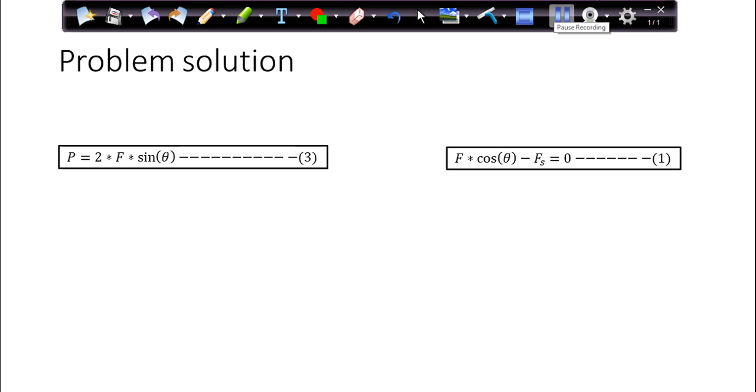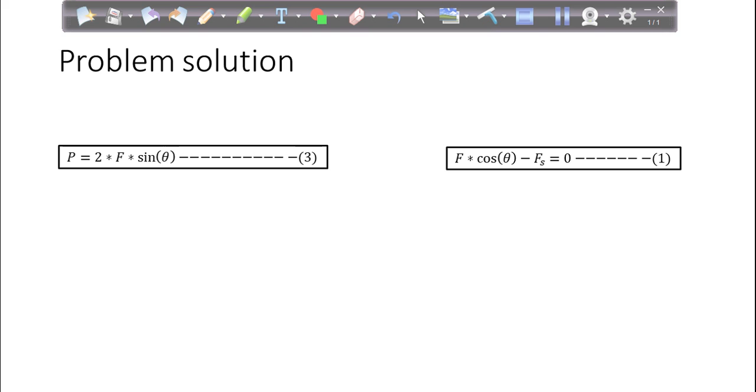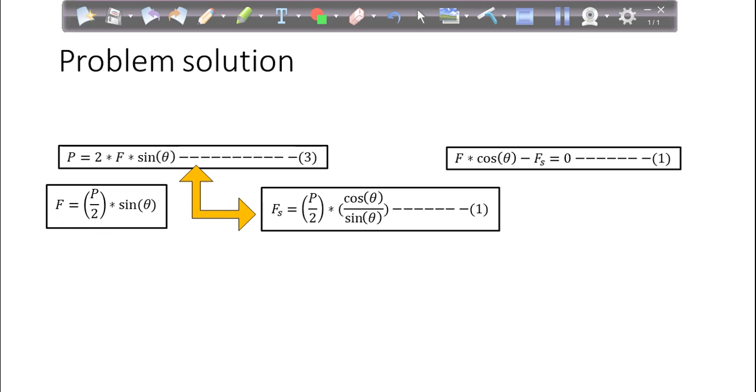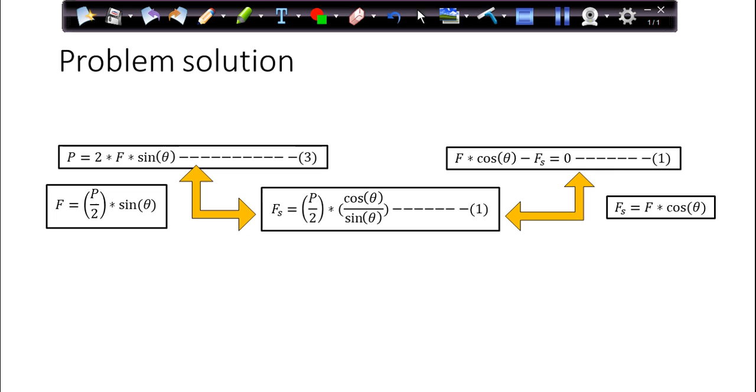So now, we have to use these equations. Now we are done with the force balance. Now we need to get these things arranged. So the first equation that was obtained from the node B was P equals 2F into sin theta. And the other equation was F into cos theta minus FS equals zero. Now, if I'm going to take first equation, what you will get from here is F equals P by 2 sin theta. And from this you will get FS equals F cos theta. So this is the equation FS. This equation you are getting from here.